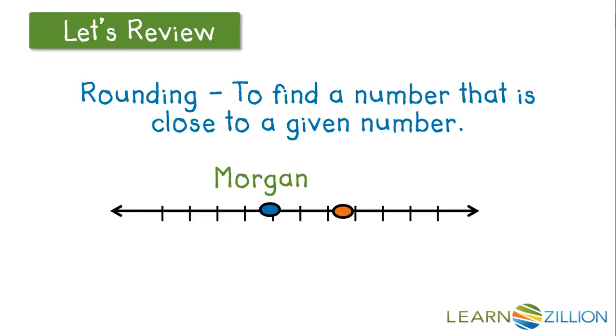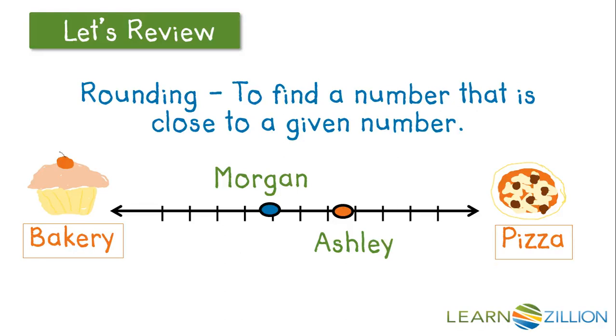On this number line, I have Morgan and Ashley who want to have a party. They want to have cupcakes and pizza at their party. Morgan is closest to the bakery, so she'll head to the bakery to pick up the cupcakes. Ashley will head to get pizza because she's closest to the restaurant. We can do the same thing with numbers on a number line and move to the closest benchmark number.